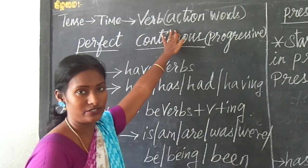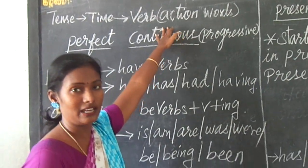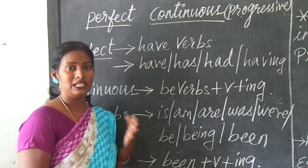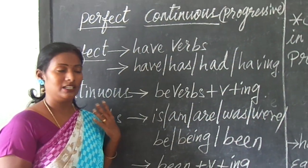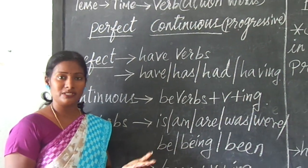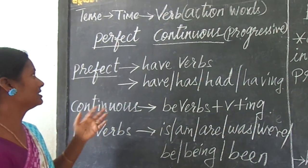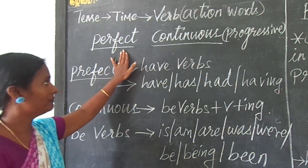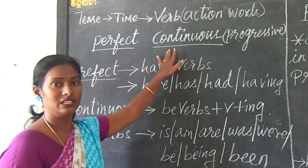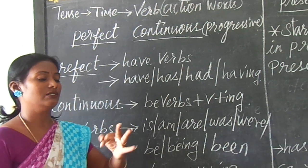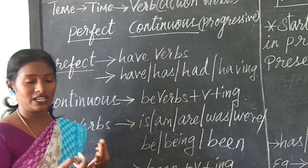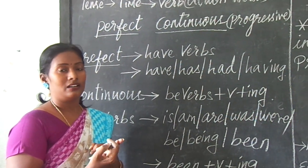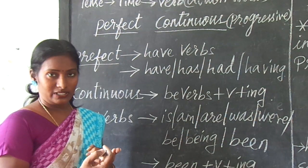Here verb is action verb, so it always says the time of the action verbs — when the action is being done, whether it is past, present, or future. So here, we are going to see only about the perfect continuous. In perfect continuous, we have three: one is present perfect continuous, two is past perfect continuous, and three is future perfect continuous.